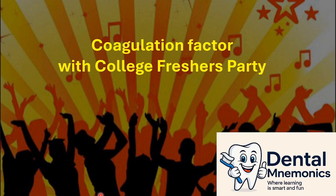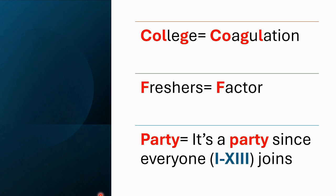We will relate coagulation factors with a college freshers party. 'Coagulation' looks somewhat like 'college,' 'factor' stands for 'freshers,' and 'party' represents the party itself. Since it's a college freshers party, students from grade 1 to 13 join — so 1 to 13 here are the coagulation factors.